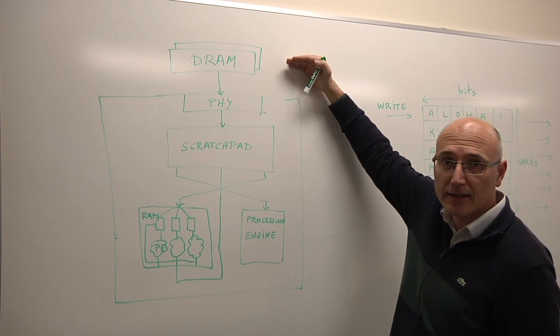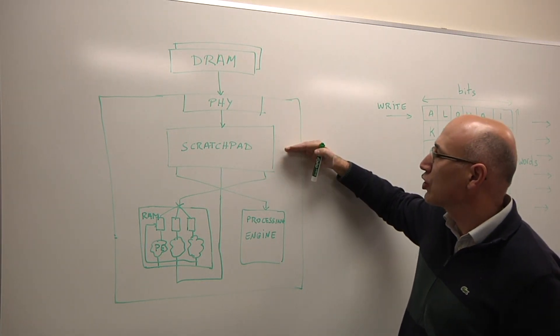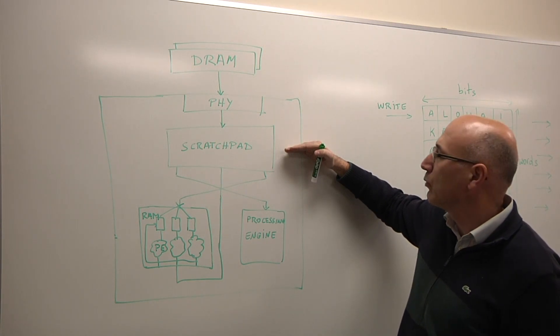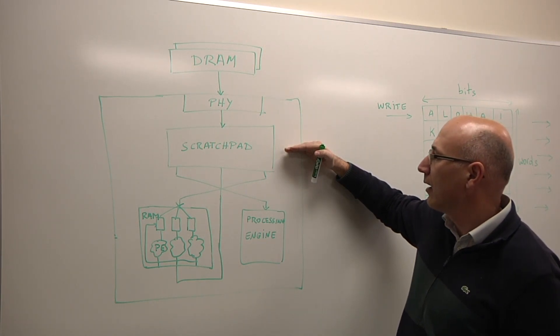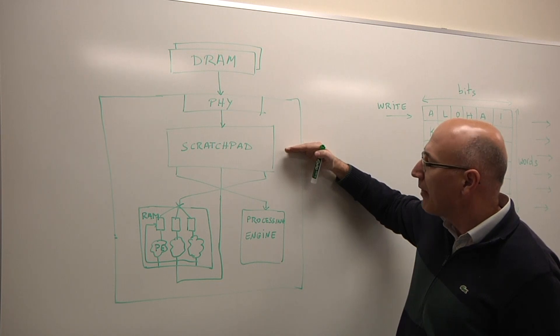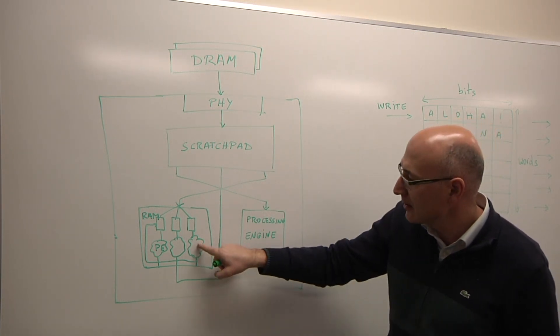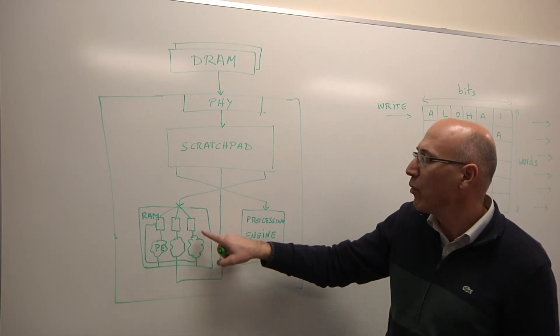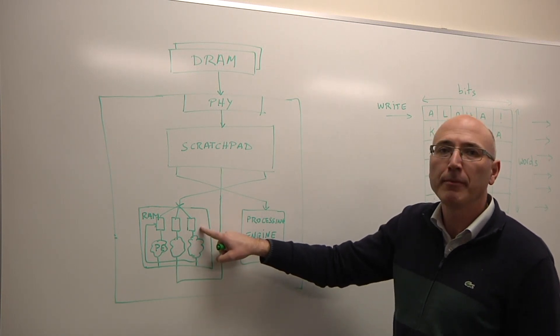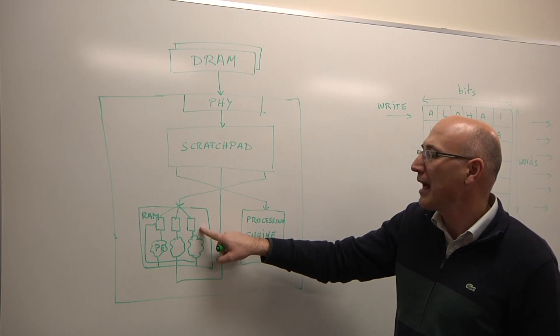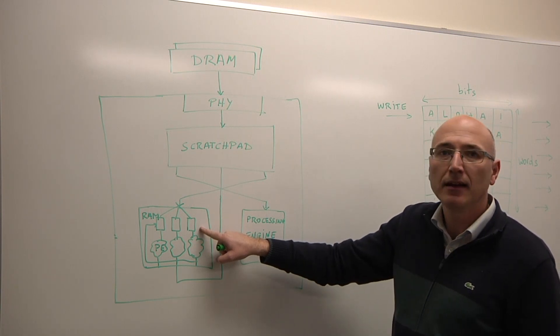So we typically have the bulk of our storage off-chip. This would be our classical DRAM. Then we have some large on-die memory that we use as temporary storage. And then, very close to our processing engines, to the logic that needs to process the data, we might have smaller memory portions, where we have the most immediately needed data.